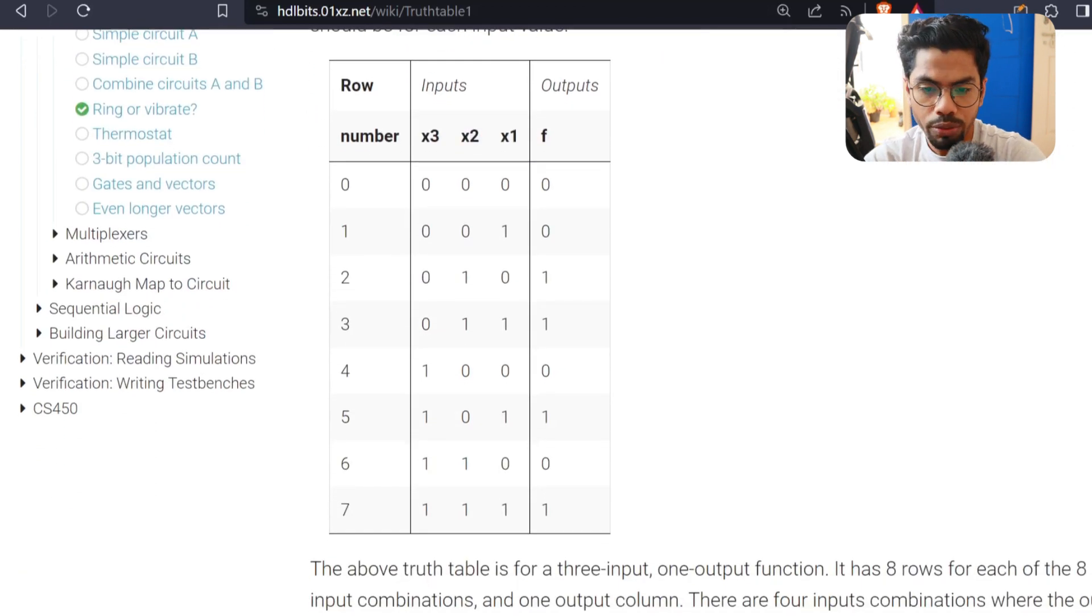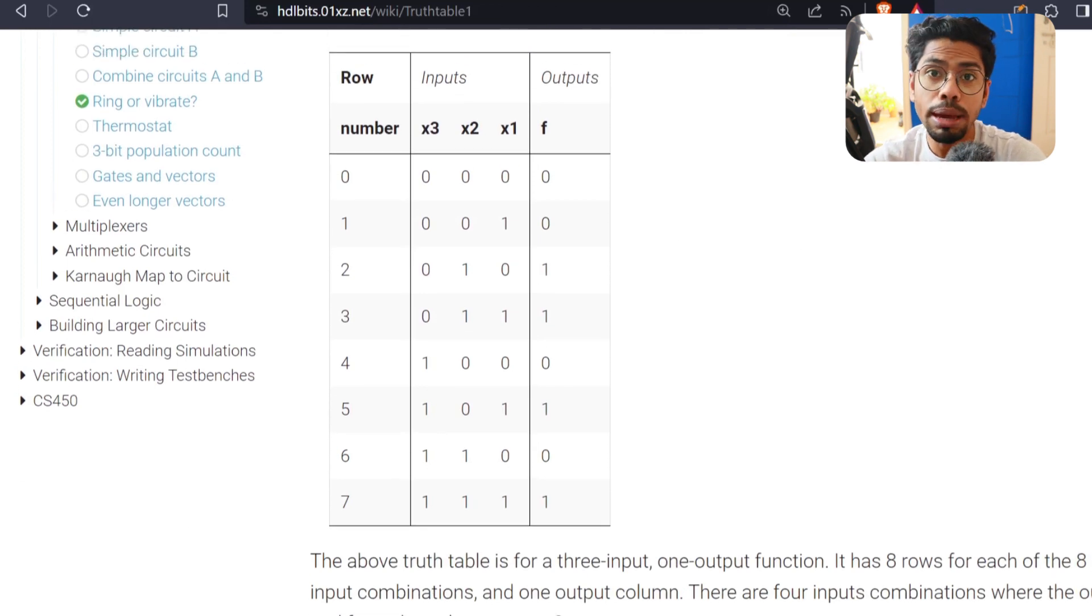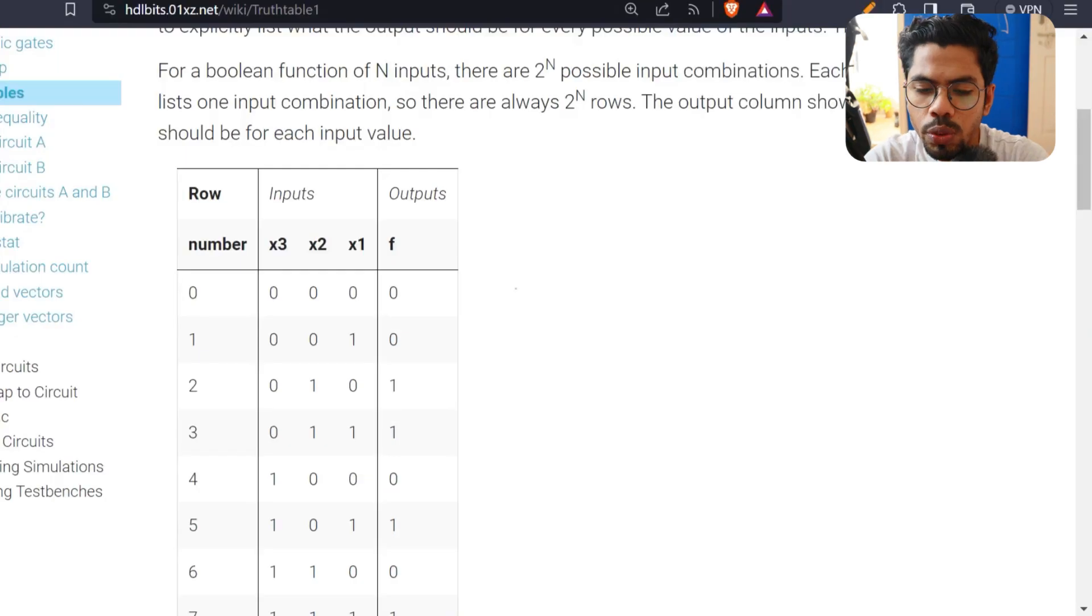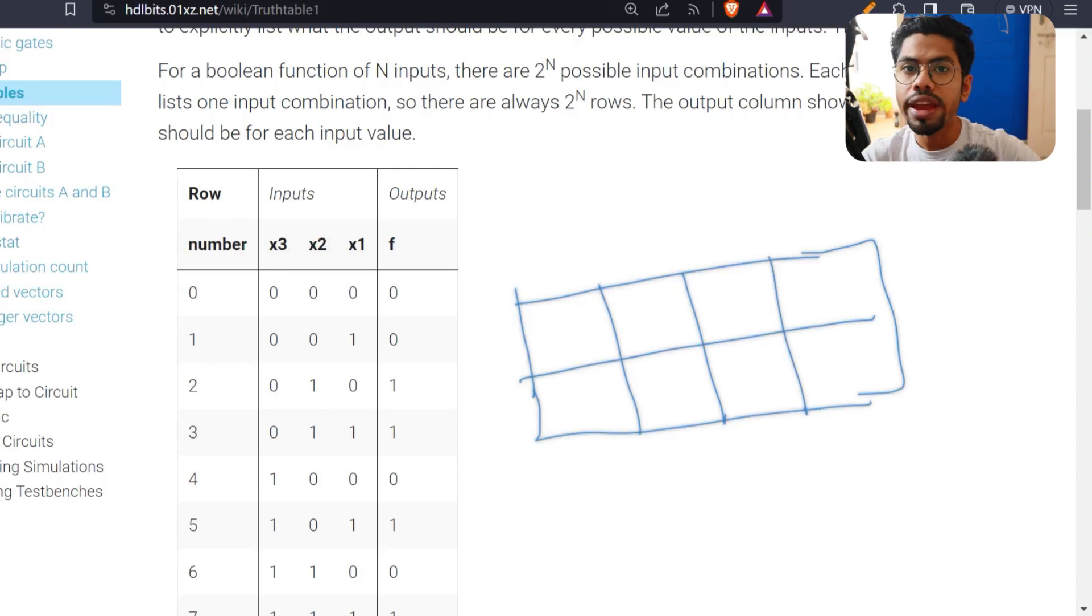For today, we need to use a three-variable K-map because we have three inputs. Now quickly we'll form our K-map for three inputs. For three inputs, we have eight combinations. So we need eight boxes, and then we will assign the numbers in K-map style: 0, 1, 2, 3, 4, 5, 6, and 7.